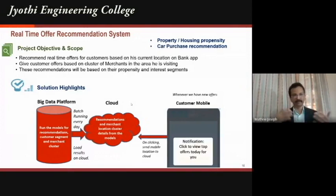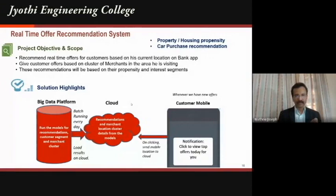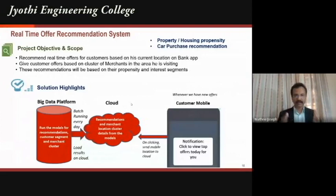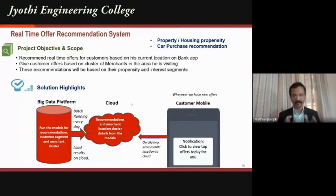In the evening, we know from your historical data that you enjoy Malayalam comedy movies. We send a recommendation saying there's a Mohanlal comedy running at a theater half a kilometer away, with 10–15% discount through our tie-up. For bigger purchases like a two-wheeler, car, or apartment, we already have tie-ups with those merchants too. For a car, since we know your income, credit history, and savings, we can recommend the right model within your budget — say an Innova at 18 lakhs — along with dealer discounts.